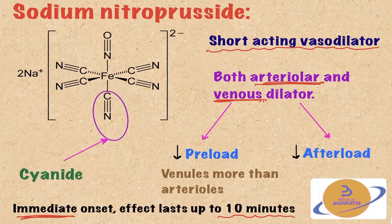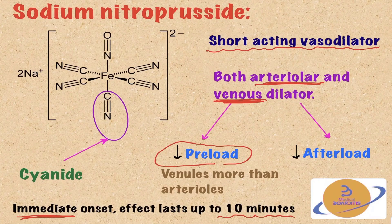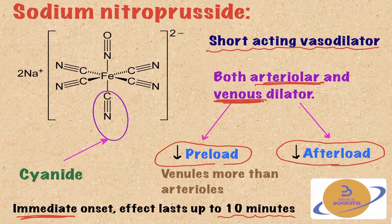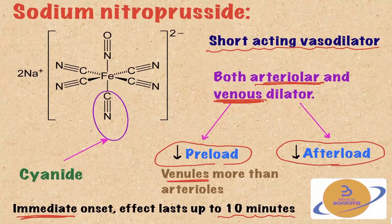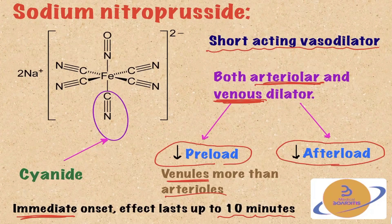By dilating the venules, it causes a decrease in the preload. And by dilating the arterioles, it will decrease the afterload, even though its effect on the venules is somehow more pronounced than its effect on the arterioles. This is similar to nitroglycerine, which we use for angina pectoris.